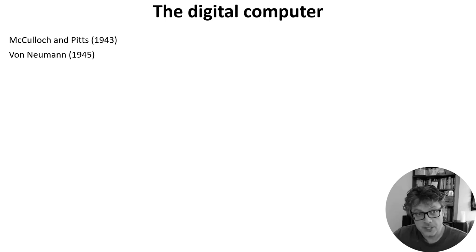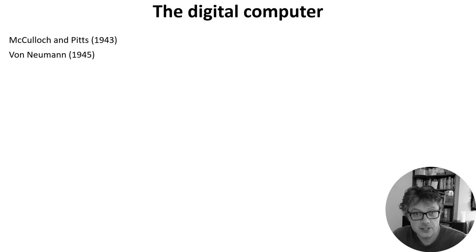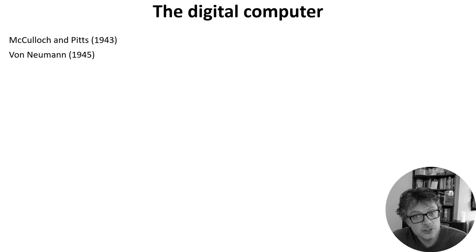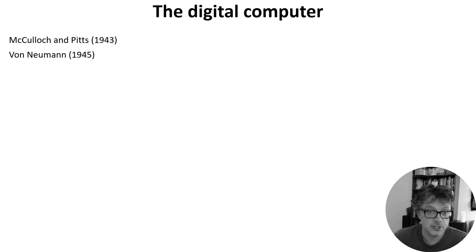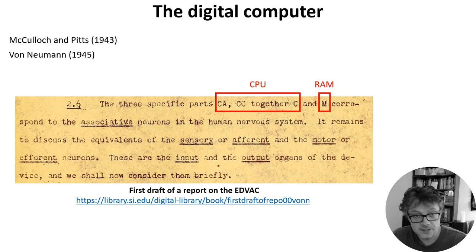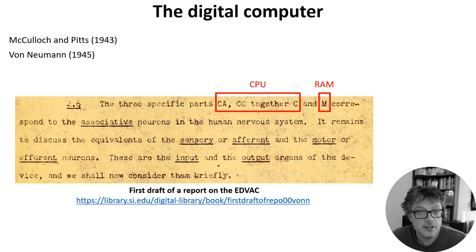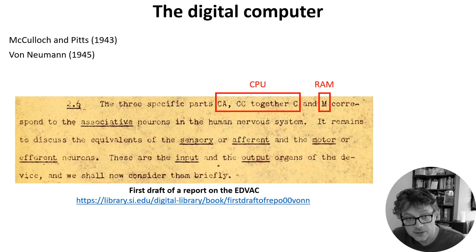As a brief interlude, I just wanted to mention that McCulloch and Pitts's work and the biology of the brain was a direct inspiration to John von Neumann, who created the architecture of the modern digital computer. You can see here he states that the CPU and the RAM correspond to the associative neurons in the human nervous system.